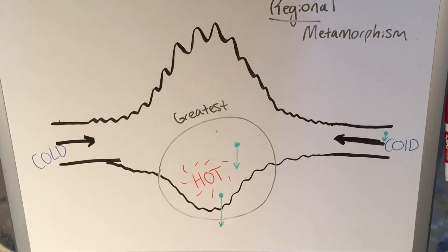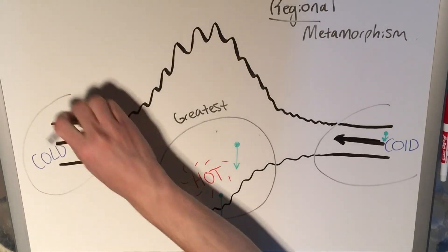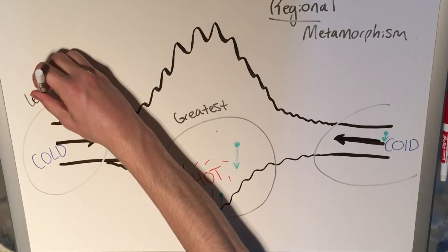So what does that mean? Well, it means that you have low pressures and low temperatures, which means you're overall going to have the least amount of metamorphism out here. Least on the margins.